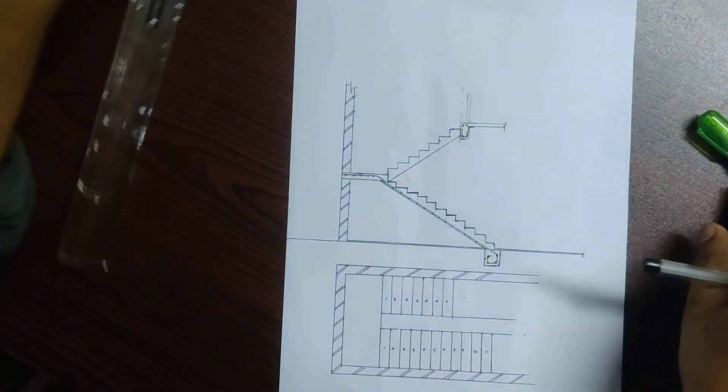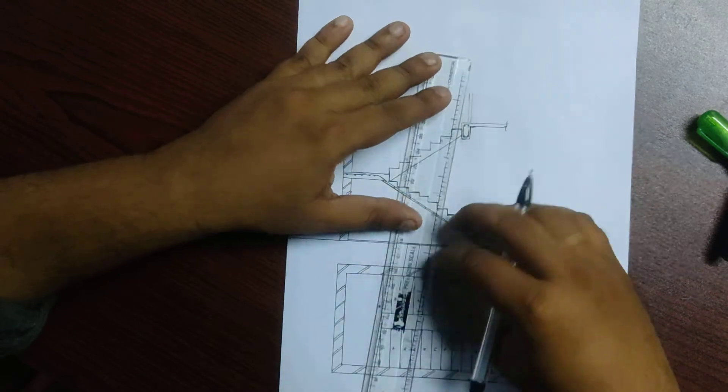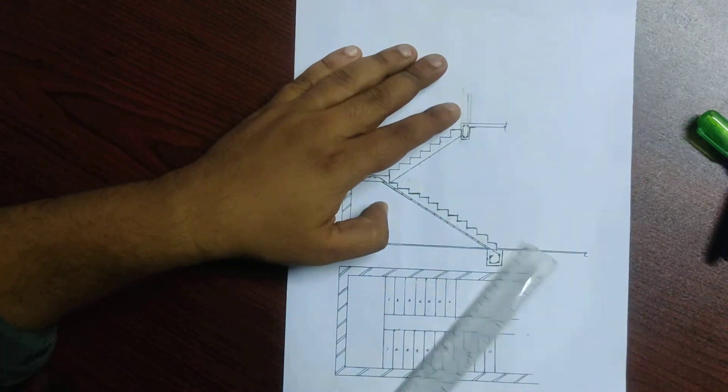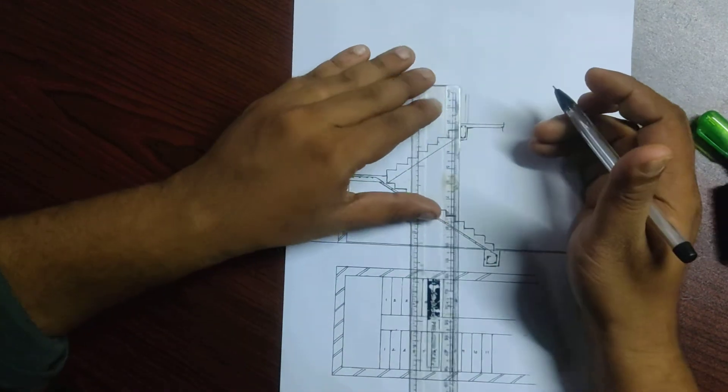We made a handrail. The handrail is 80 centimeters. We made the conversion to centimeters.